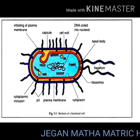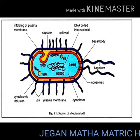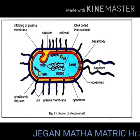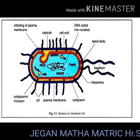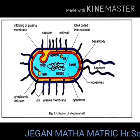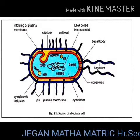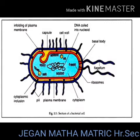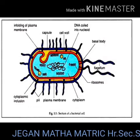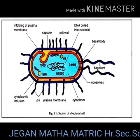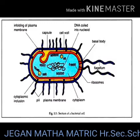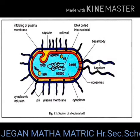Cytoplasm is thick and semi-transparent. It contains ribosomes and other cell inclusions. The bacterial chromosome is a single circular DNA molecule.